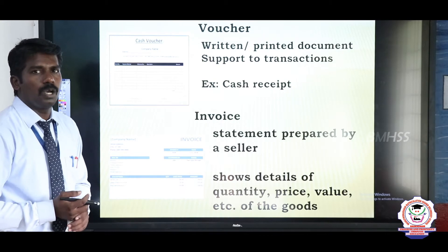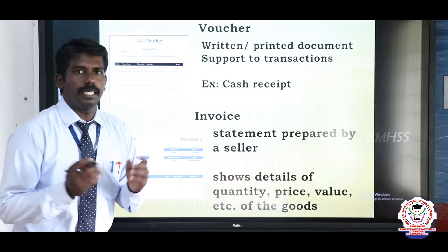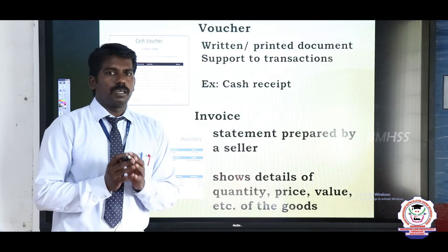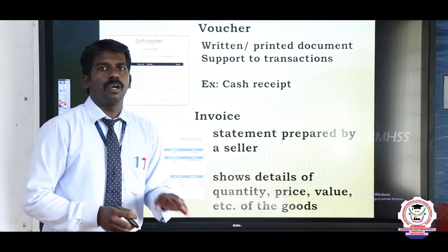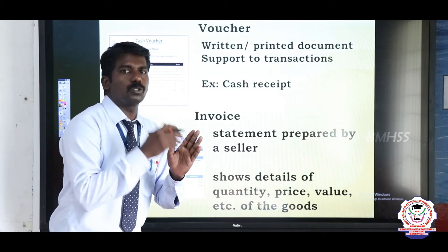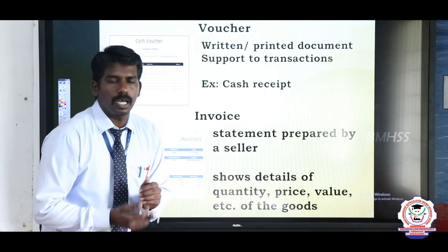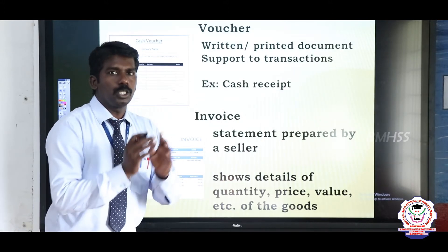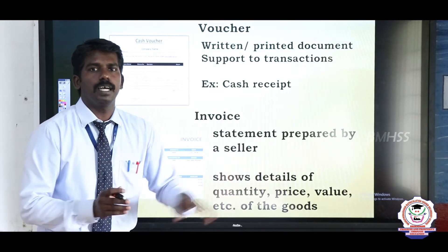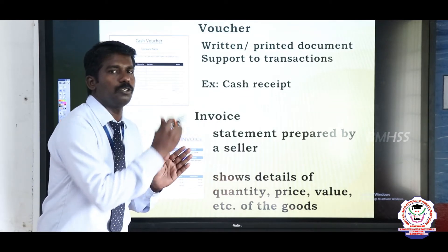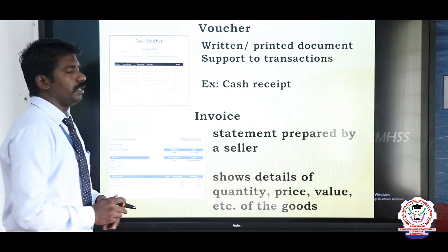Next one is the invoice. What is an invoice? An invoice is a statement prepared by the seller. What items are included in the invoice? What types of goods are sold to the buyer, on which date the sale was made, how many quantities are sold to the buyer, and how much value of goods are transferred from seller to buyer — all this information will be disclosed in the invoice.